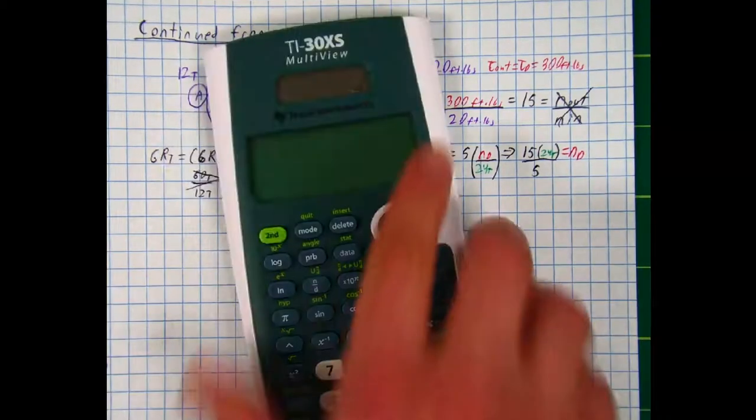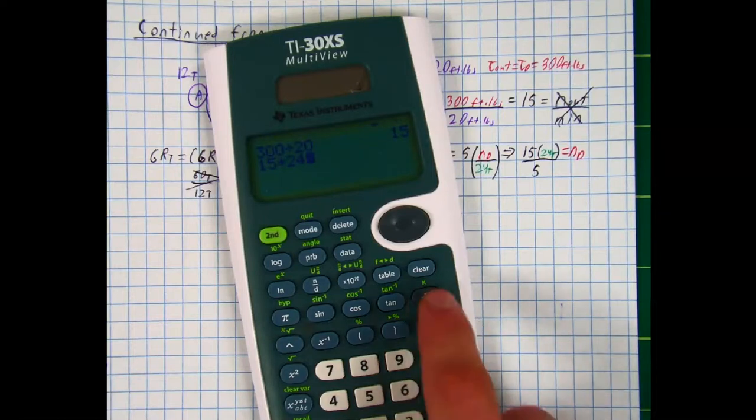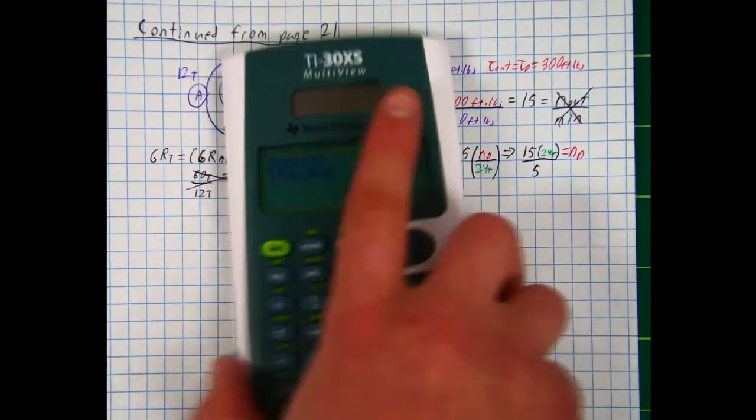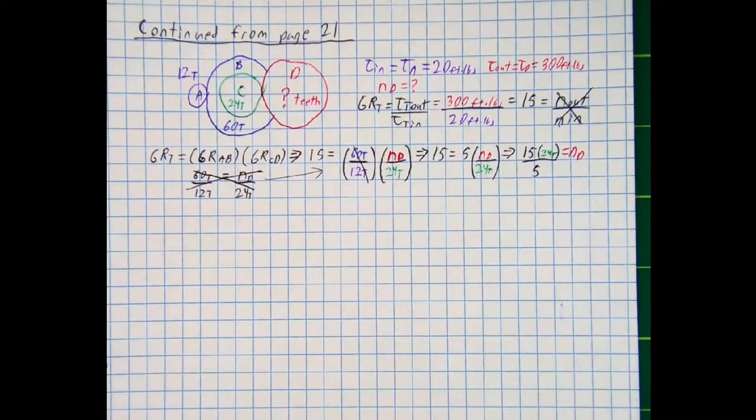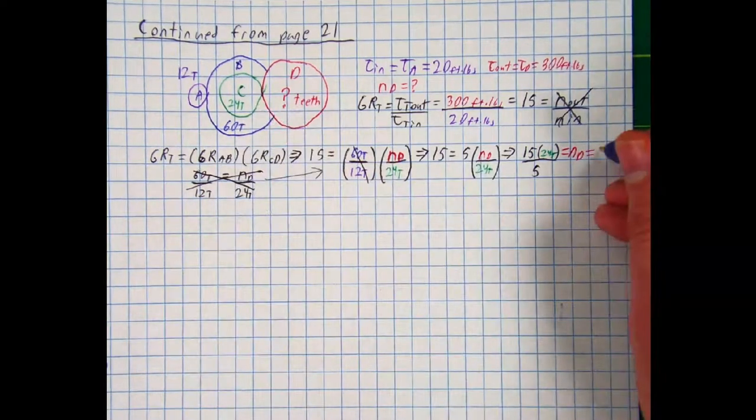And so what is that? What is 15 times 24 divided by 5? We get 72. And so there you go. There's our answer. The number of teeth at gear D is 72.